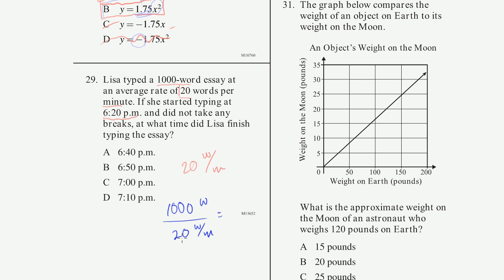What's 1,000 divided by 20? You could do this in your head: 100 divided by 20 is 5, and 1,000 is 10 hundreds, so it's 50. Or you can do the long division: 20 goes into 1,000 exactly 50 times. So it takes 50 minutes.